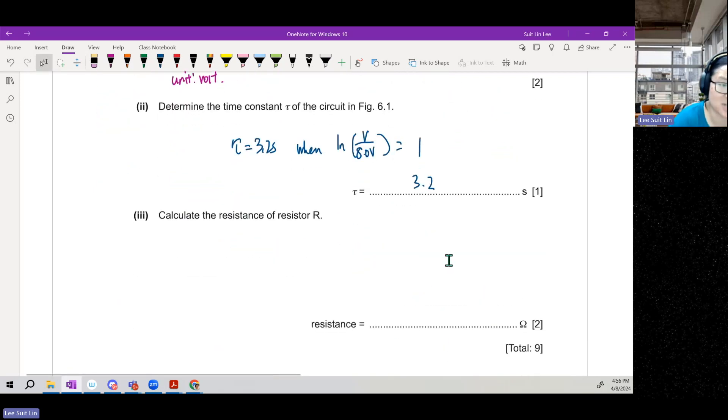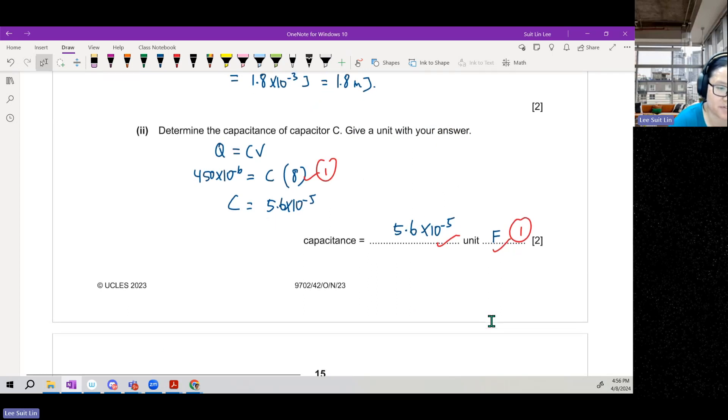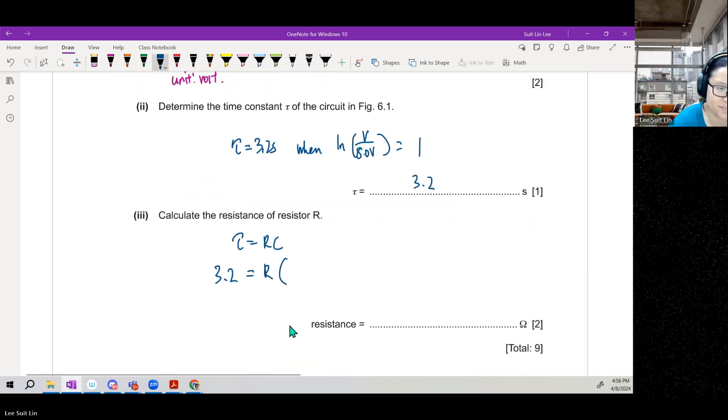Next, calculate the resistance of R. τ equals RC. We got the time constant. We have the capacitance. We just calculated it here, 5.6 times 10 to the negative 5. So from here, you can put your calculator and you'll get 5.7 times 10 to the power of 4 ohms.